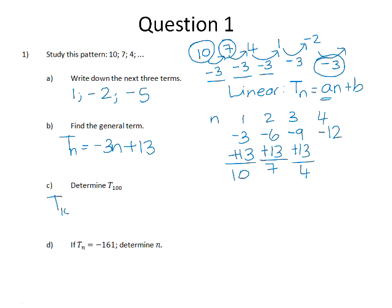T100, now that we've got our general term, we can substitute n for 100 to find the term in the 100th position. Negative 3 times 100 is negative 300. Add 13 is negative 287.